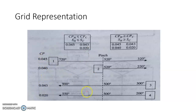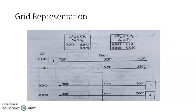Cp_hot for stream 1 is 0.045, and the two cold streams have Cp values of 0.04 and 0.02. We cannot directly exchange energy between these at the pinch because the slope difference means ΔT would fall below the minimum of 20°C. Therefore, we need to split the hot stream so that its individual heat capacity flow rates become 0.043 and 0.02 or less respectively.